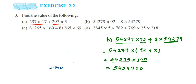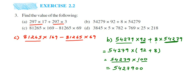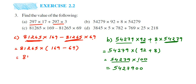The third question: 81265×169 − 81265×69. Here 81265 is present on both sides of the subtraction, so we take it out: 81265×(169−69). Since 169−69 equals 100, we again get a multiplication by 100. So the answer is 81265 followed by two zeros. That was the third problem.